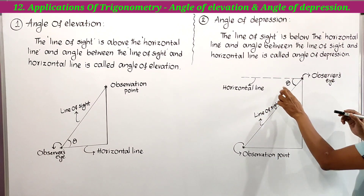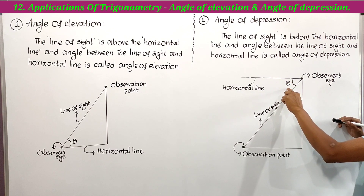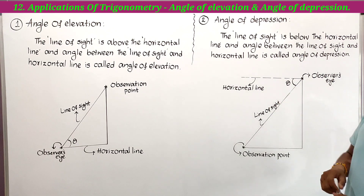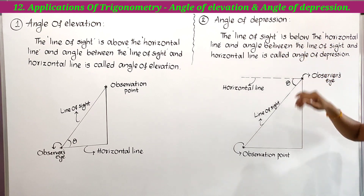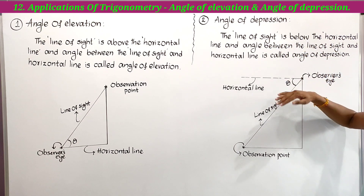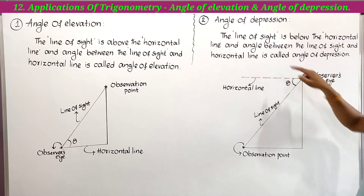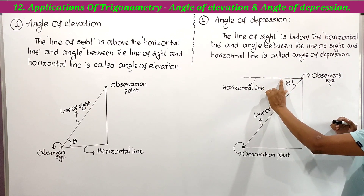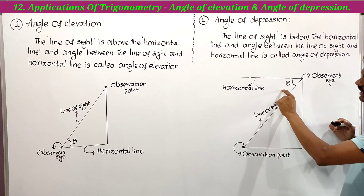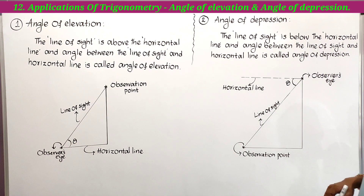The angle between the horizontal line and the line of sight is called the angle of depression. Once again: the line of sight is below the horizontal line. The angle between the line of sight and the horizontal line is called the angle of depression.